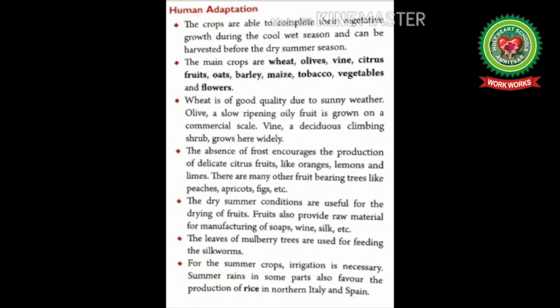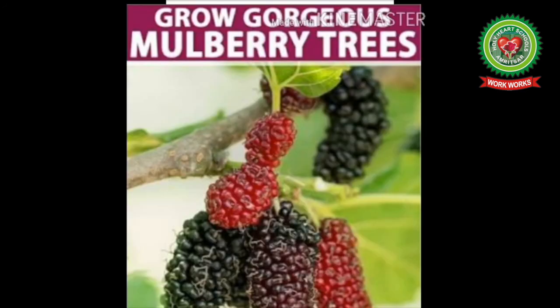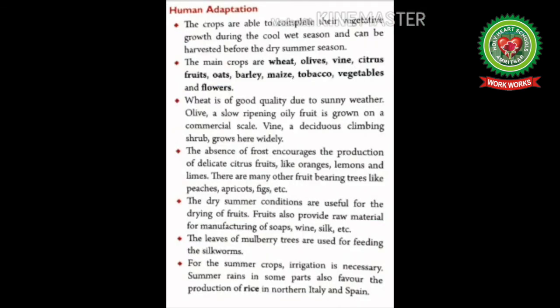Coming back to the reading — Human Adaptation: The crops are able to complete their vegetative growth during the cool wet season and can be harvested before the dry summer season. The main crops are wheat, olives, wine, citrus fruits, oats, barley, maize, tobacco, vegetables, and flowers. Wheat is of good quality due to sunny weather. Olive is a slow-ripening oily fruit grown on a commercial scale. Wine is a deciduous climbing shrub that grows widely here. The absence of frost encourages the production of delicate citrus fruits like oranges, lemons, and limes. The dry summer conditions are useful for drying fruits; fruits also provide raw material for manufacturing soaps, wine, and silk. The leaves of mulberry trees are used for feeding silkworms. For summer crops, irrigation is necessary; summer rains in some parts also favor the production of rice in northern Italy and Spain.